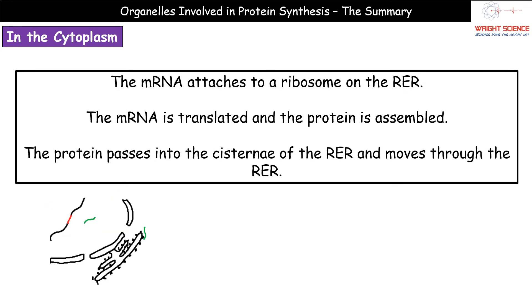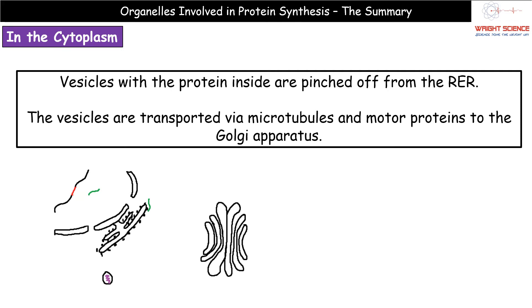That mRNA is then going to pass out of the nucleus through one of these nuclear pores. We can always spot the envelope of our nucleus because it has that double membrane with the pores there. The next thing that happens is our mRNA strand is actually going to attach to a ribosome on our rough endoplasmic reticulum, the RER. When that's happened, the mRNA is going to be translated, and therefore we can assemble the protein. That protein that we've just synthesized is then going to move into the cisternae of our rough endoplasmic reticulum and just move through it.